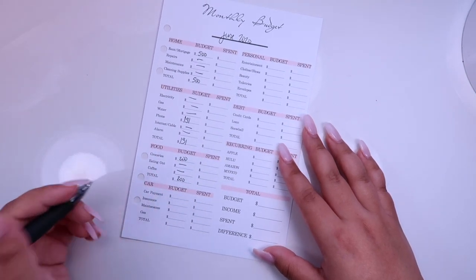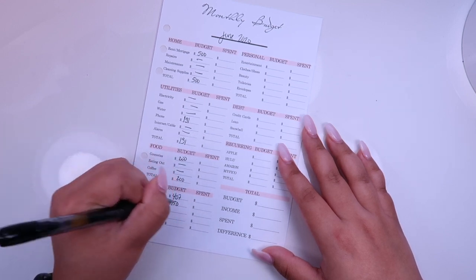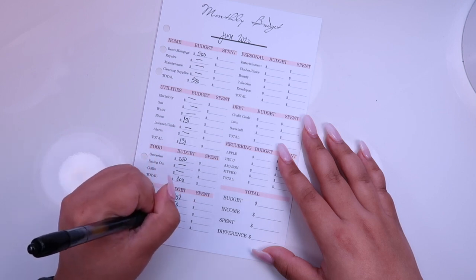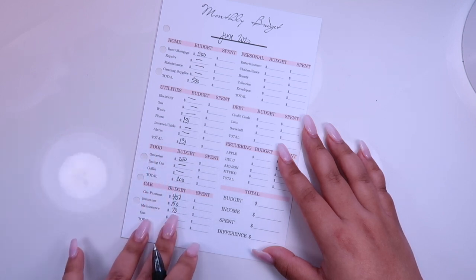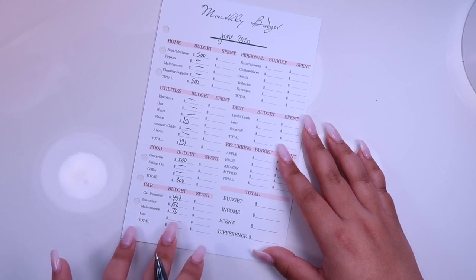So my total for this is $200. My car payment is $407. My insurance is $150. I do need to pay for maintenance this month because I need to get an oil change. No, sorry, not an oil check. I need to go get an inspection and my sticker.